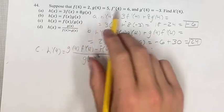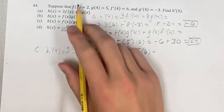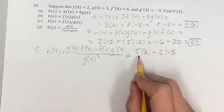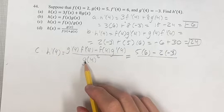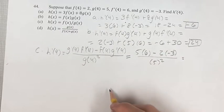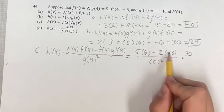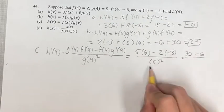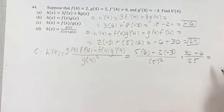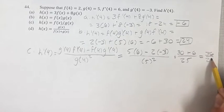Plugging in: g of 4 is 5, f prime of 4 is 6, minus f of 4 which is 2, times g prime of 4 which is negative 3, over g of 4 squared which is 5 squared. So we get 30 minus 2 times negative 3 — that's positive 6 — over 25. Moving it over a bit, we get 36 over 25.